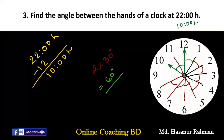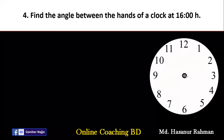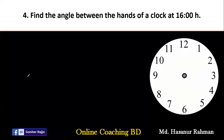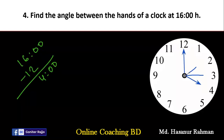Remember: in every hour the hands of a clock will create 30 degrees. Number four says: find the angle between the hands of a clock at 16 hours. 16 minus 12 equals 4 hours. At 4 hours, the hour hand is at 4 and the minute hand is at 12. From 12 to 4 there are four hours, and one hour creates 30 degrees, so four multiplied by 30 degrees equals 120 degrees.